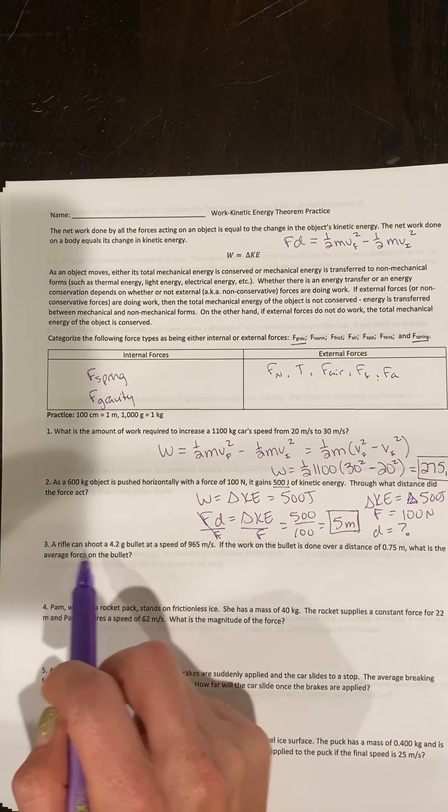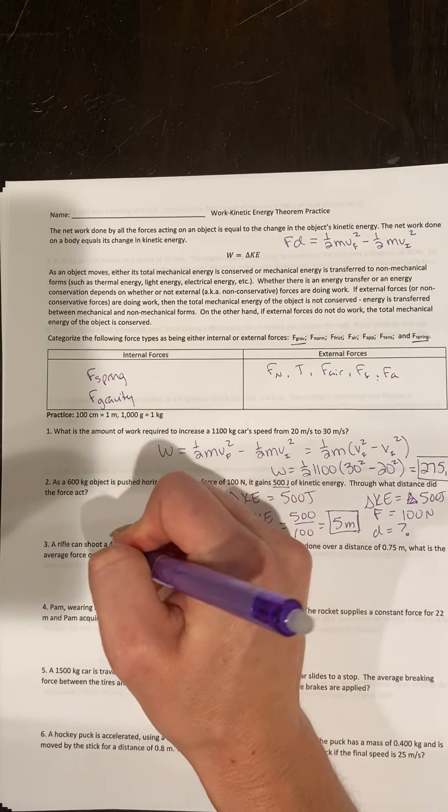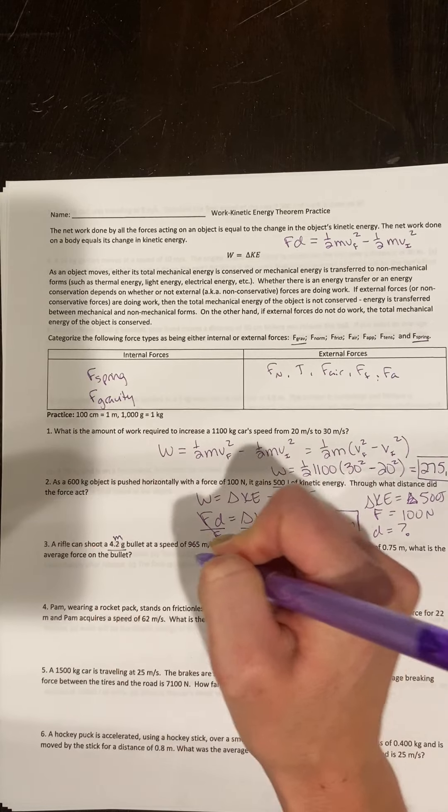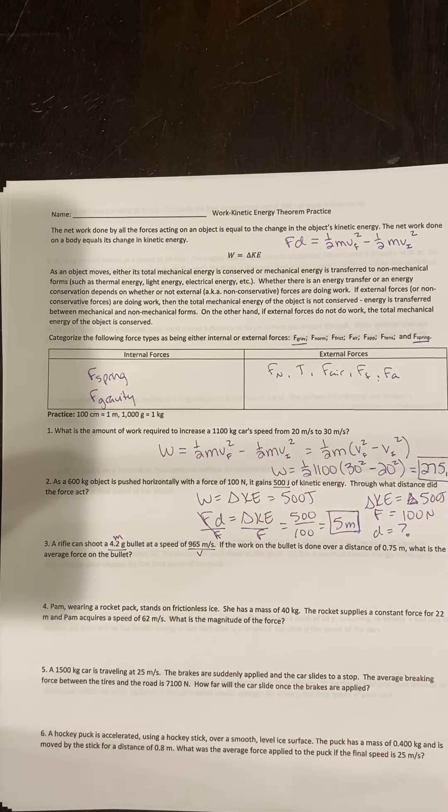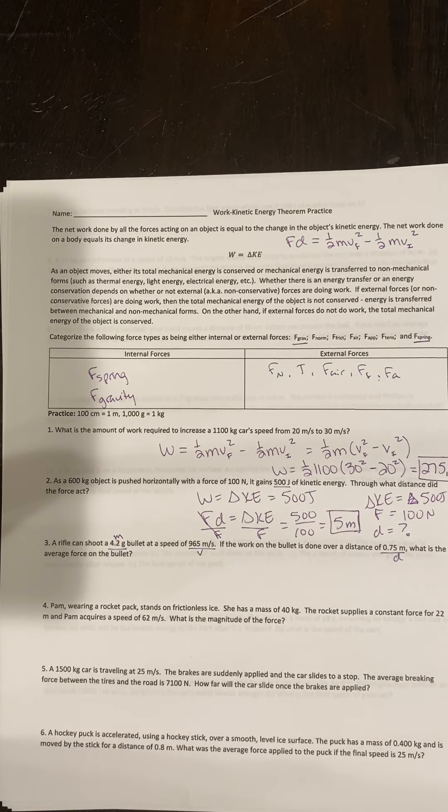Let's just keep going. We've got a rifle that can shoot a 4.2 gram bullet. This is my mass. I have my velocity. The work done on the bullet over a distance - we have my displacement. What is the average force on the bullet?